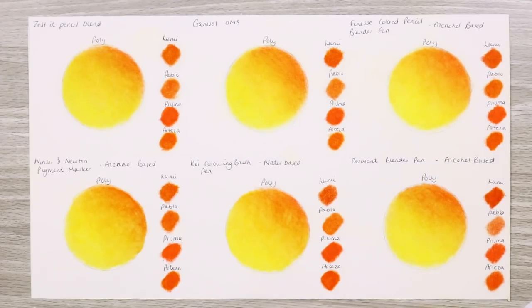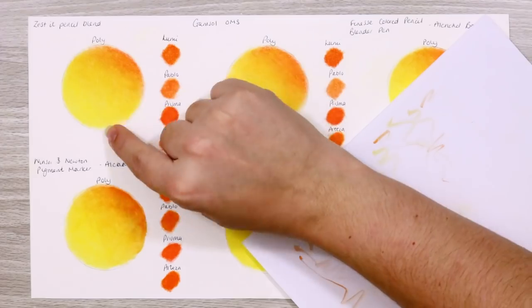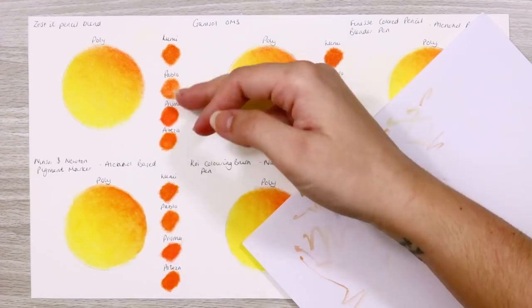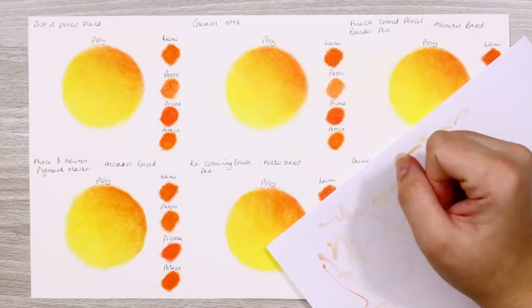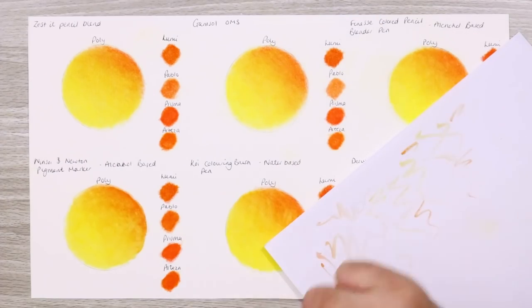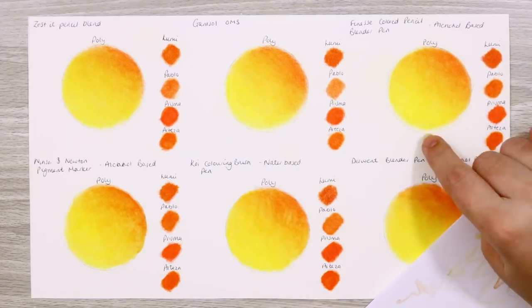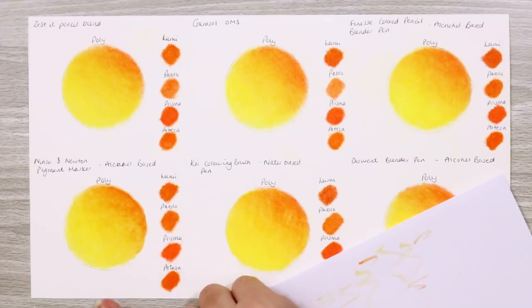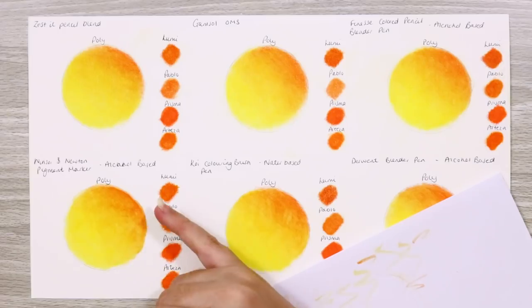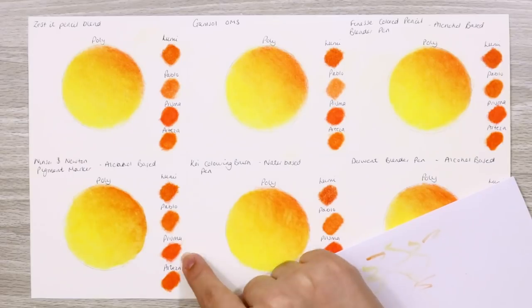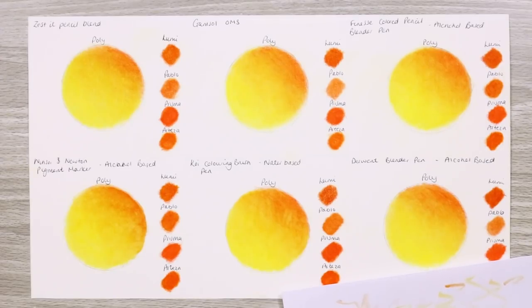So which one was my favorite? Definitely the Zest It and the Gamsol. I can't really choose between either because they did exactly the same job and the results are pretty much the same. I'm going to pick the Gamsol though, purely because the Zest It citrus really gets up my nose and I just can't stand the smell anymore. Between the other four, hands down it's the Finesse blender pen. Although when you relay pencil it's hard to see a difference between either blending method, the Finesse was the one which I had the least issues with. It didn't pick up too much pigment and leave things super patchy, and the relaying of pencils was really easy. The worst of the bunch for me was the Koi coloring brush pen.